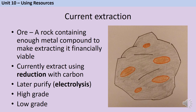Ores can be split into those that are high grade and low grade, and the difference is basically how much metal is in them. In the days when copper wasn't particularly expensive, you would only want to extract it from an ore with maybe 5% copper in it. But as copper has got scarcer and the price has gone up, it's become financially viable to use low grade ores, and we will now extract copper from rocks that contain less than 1% copper by weight.